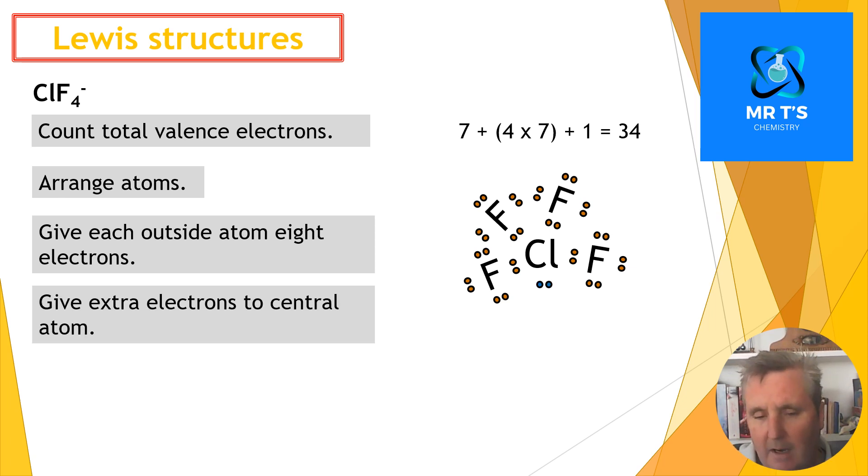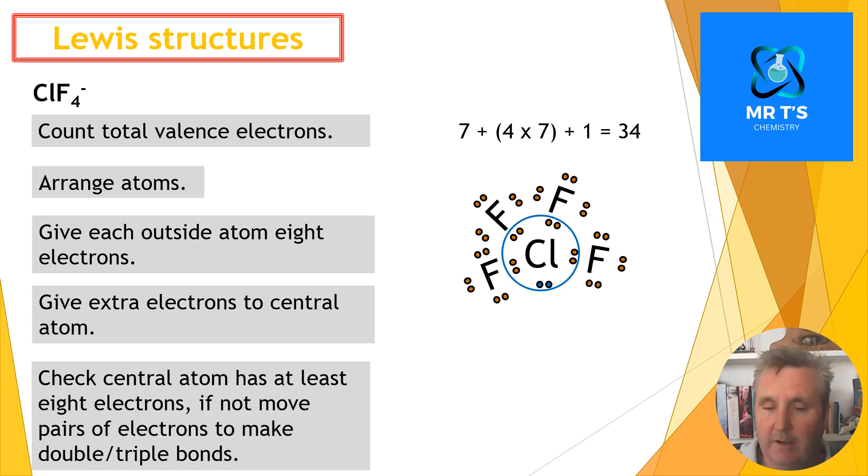Check that I have eight in the middle—I do, I'm happy. Now I'm going to redraw this so I'm going to draw bonds where there are two electrons shared between chlorine and the outside atom. I'm also going to put a square bracket around it and then put the charge to represent that this is actually representing the ion ClF4-. I need to show that I've added one extra minus, and I do that by putting a square bracket with a minus outside.